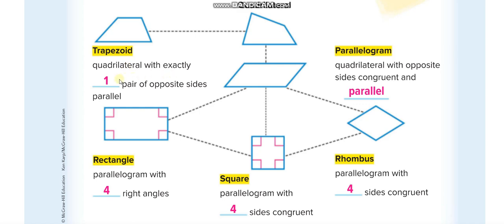The first one is the trapezoid — a quadrilateral with exactly one pair of opposite sides parallel. I hope you guys know what parallel lines are from grade 4. I uploaded a video for grade 4, chapter 14 lesson 2, and I will provide the link in the description for parallel, intersecting, and perpendicular lines. You can see here that these two opposite sides are parallel — parallel lines are those lines which never meet each other at any point if you continue them.